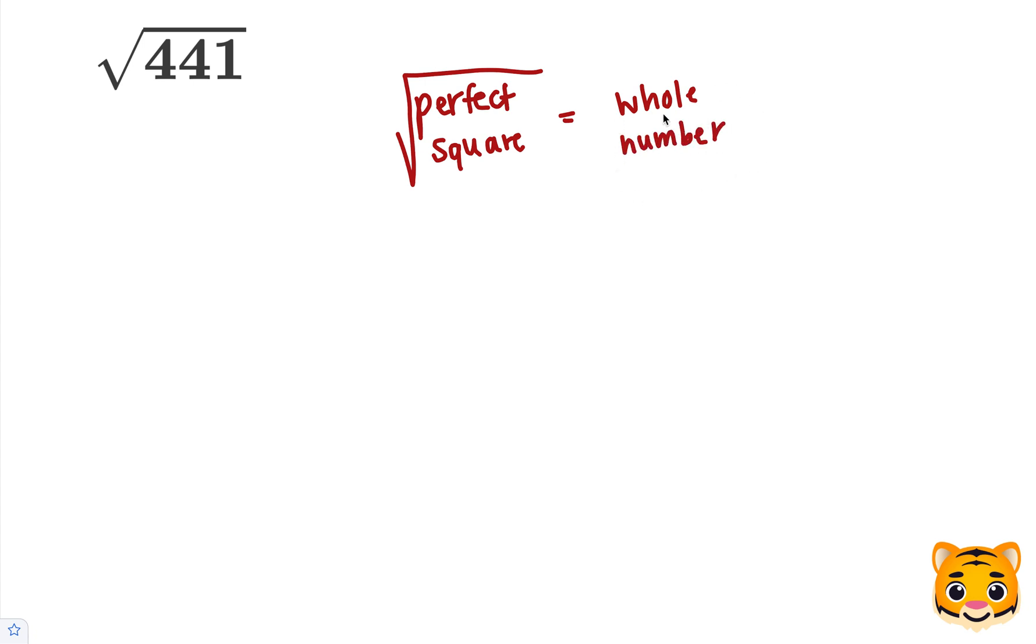To figure out which whole number value is equivalent to the square root of 441, we can think about perfect squares nearby to 441. Let's start with 20 squared. 20 squared is equal to 400.